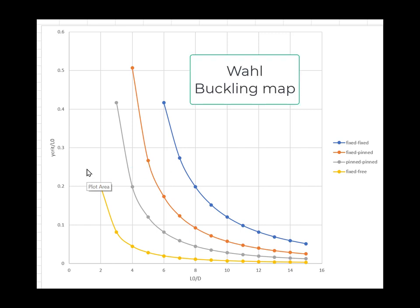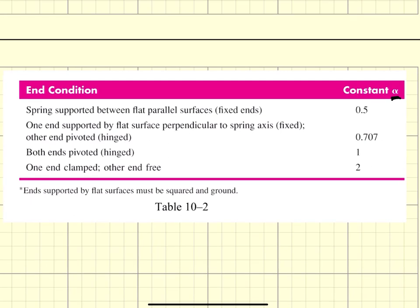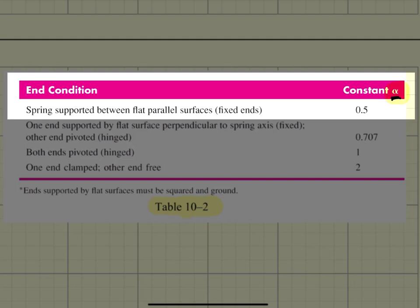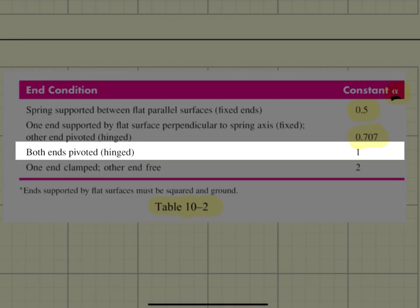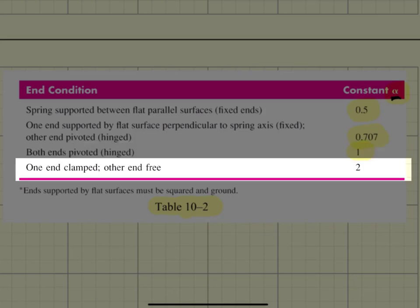Table 10-2 in the Shigley textbook provides this end condition constant alpha for different support conditions. If the ends are fixed at both top and bottom, alpha is 0.5. If one end is fixed and the other is hinged, the constant is 0.707. If both ends are pinned, the constant equals 1. And if one end is clamped and the other is free, alpha is 2.